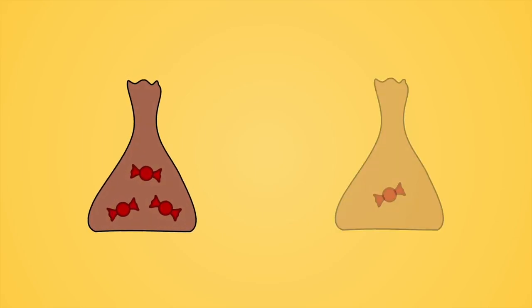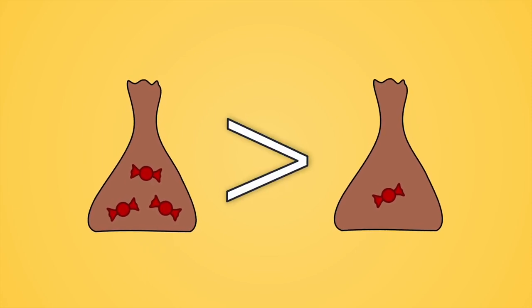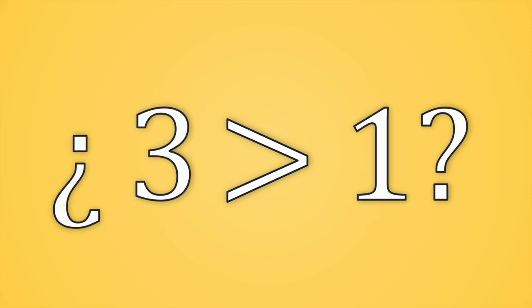Another important property of naturals is order. If we have two bags of candies, we can easily affirm that the one on the left has more candies than the one on the right. But in fact, what does ensure that the number 3 is bigger or goes after the number 1? They are just symbols that represent sets of things. Here, the concept of successor is key.